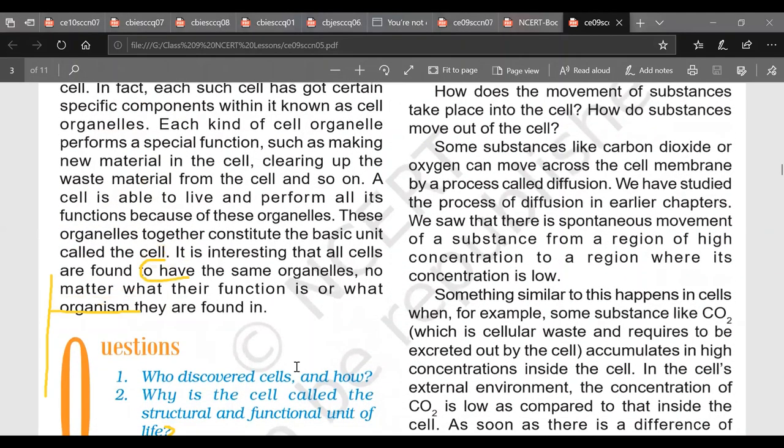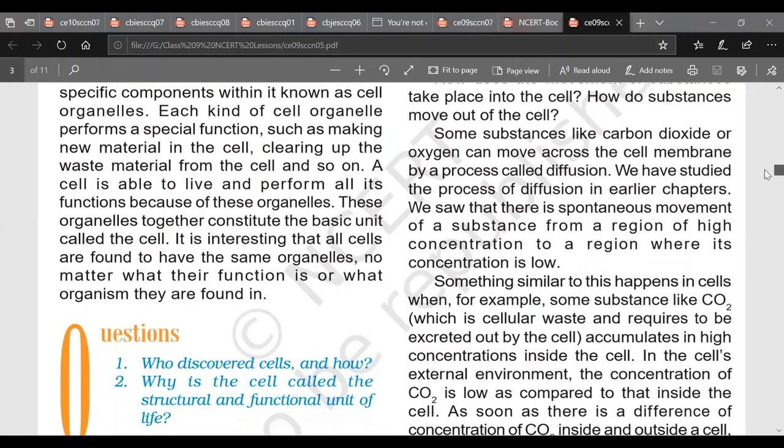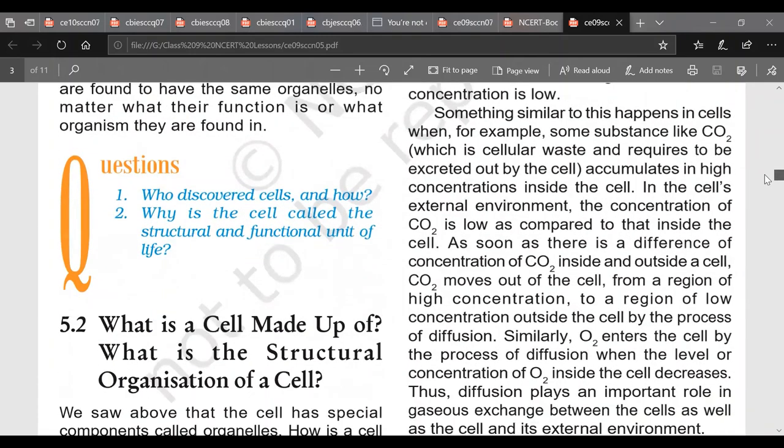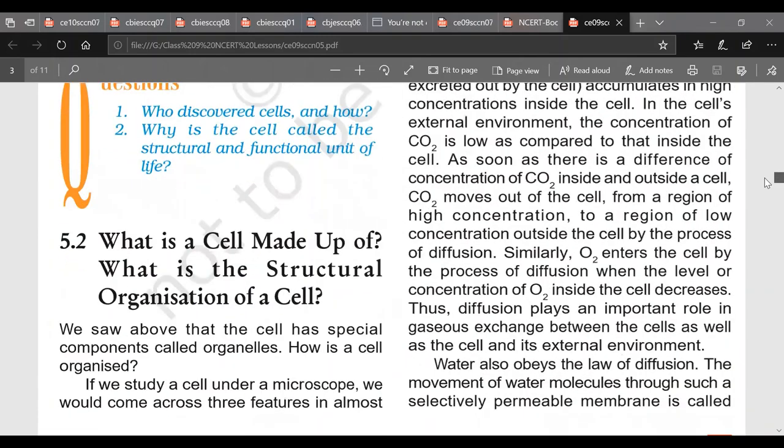All cells are found to have same organelles no matter what their function is or what organisms they are made up of, they are found in. So here are two questions. First one we have already done. Second one also in a part we have done. Why cell is called structural and functional unit of life? Because every organism is made up of cells. This is what our cell theory says. And functioning of body is sum total of functions of organisms. So cell is functional unit also.